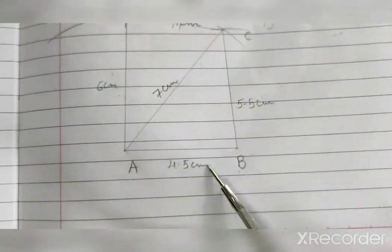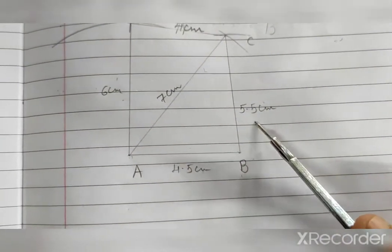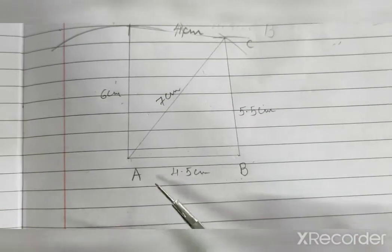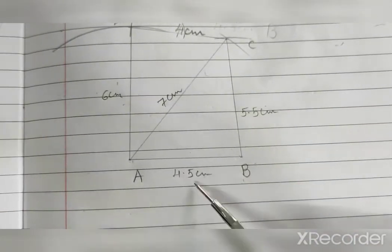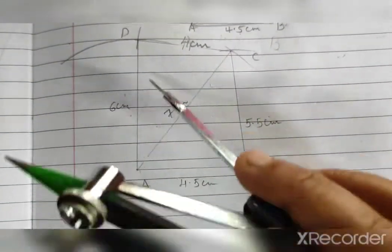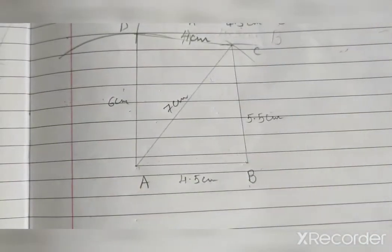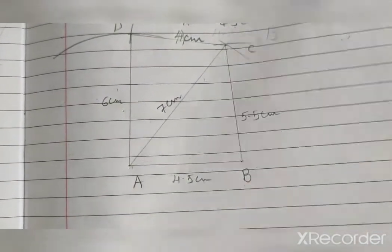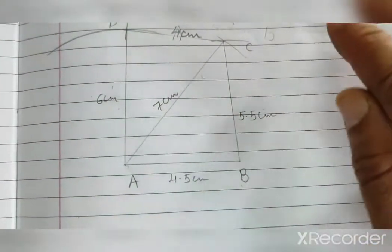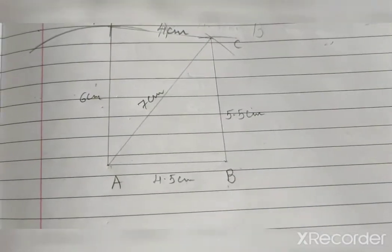Where A-B, B-C, C-D, A-D, and the diagonal are the given measurements. Now it's your choice — if you want to draw the diagonal first, you can draw.